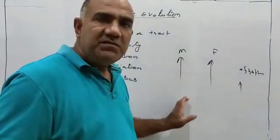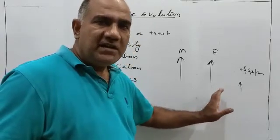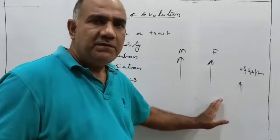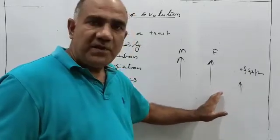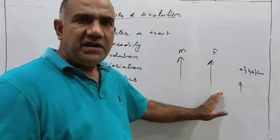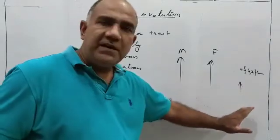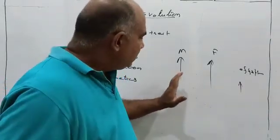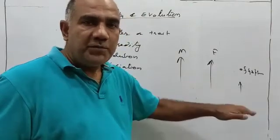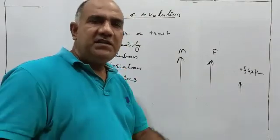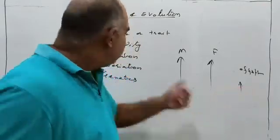Father is tall, mother is dwarf, and child becomes tall, so I will say the character height has been transferred from the father to the offspring. And if father is dark complexion, the skin is dark, and the skin of the mother is fair, and the child becomes fair-skinned, we say the color of the skin has been transferred to the offspring from the mother. Like this, the transfer of characters or traits from the parents to the offspring, that is called heredity.